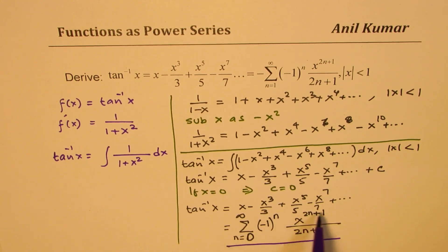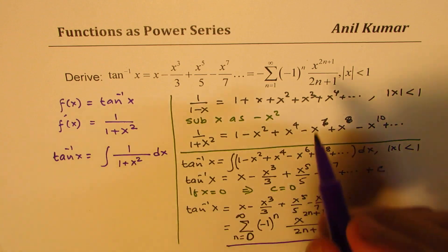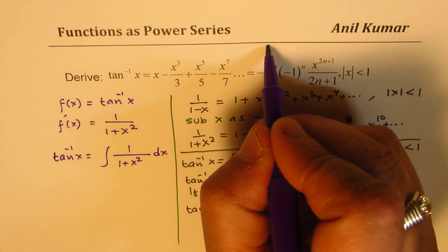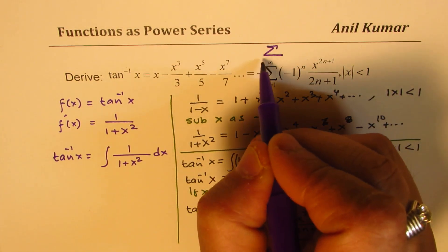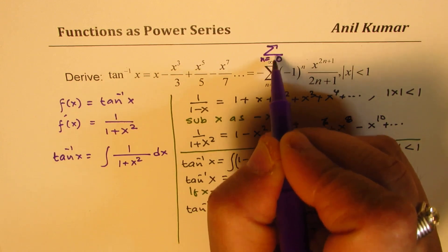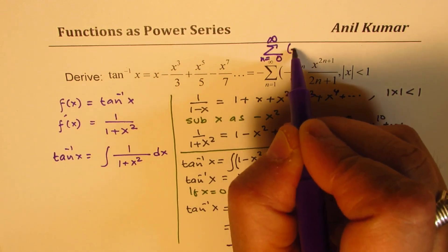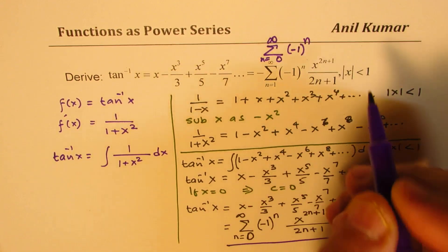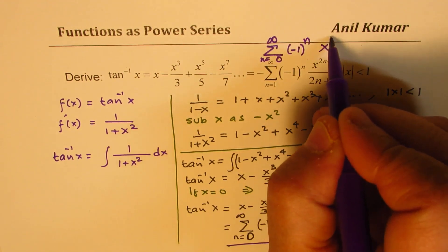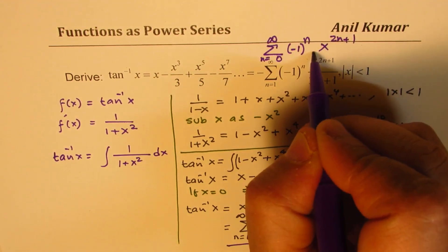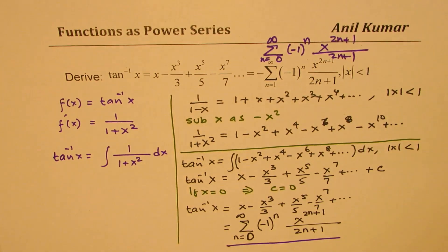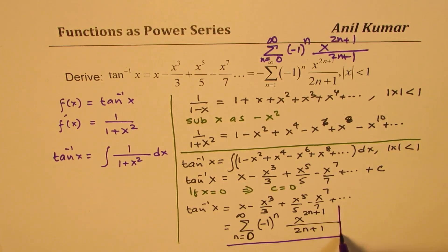For n equals to zero to infinity, minus one to the power of n, x to power 2n plus one, divided by 2n plus one. So I'll rewrite this formula as x equals to n equals zero to infinity, minus one to the power of n, and then we write this as x to the power of 2n plus one over 2n plus one.